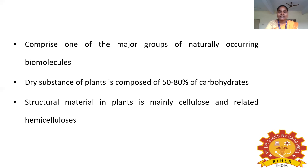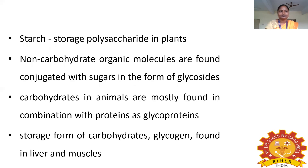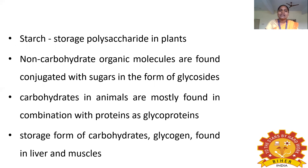The structural material in plants is mainly cellulose and hemicellulose. Starch is a storage polysaccharide present in plants, while cellulose is an example of a structural polysaccharide.